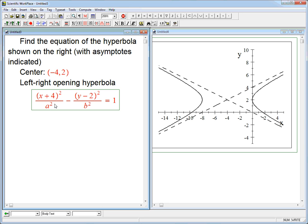Now, a is always the one that goes with whichever term is positive. Here x is positive, and the reason x is positive is because it's left-right opening. That's why this is plus and the y is minus. And then a is always the distance from the center to the vertex, which is 4.